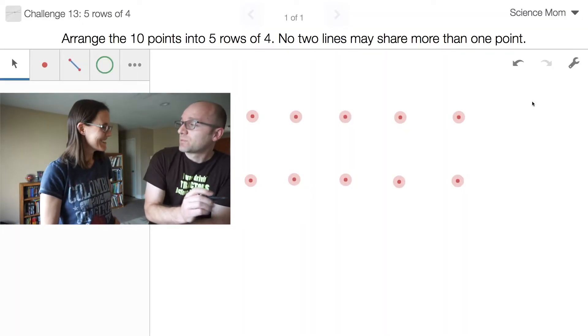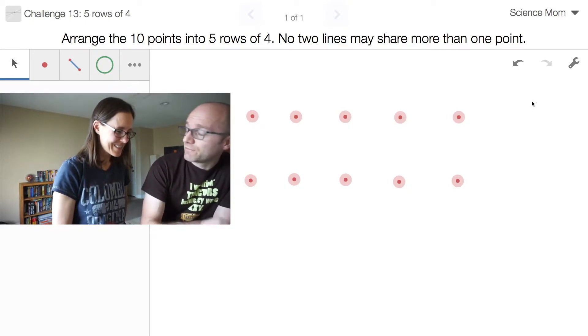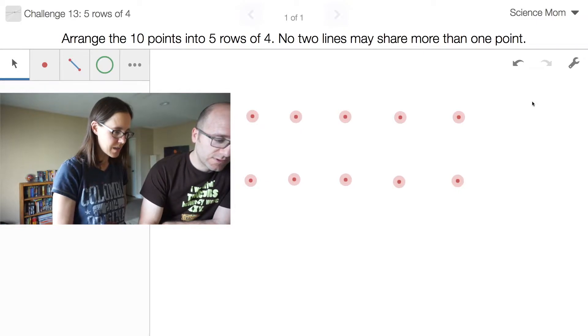She needs diabolical problems. All right, in this problem your task is to take these ten points and arrange them into five rows of four points each. Five rows of four points each.